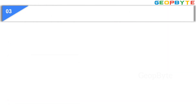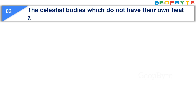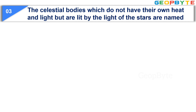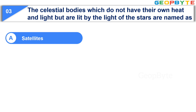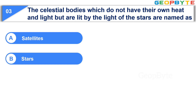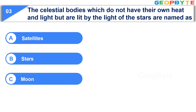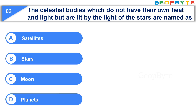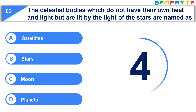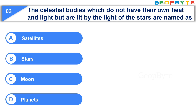Now let us see the third question: The celestial bodies which do not have their own heat and light but are lit by the light of the stars are named as — Option A: Satellites. Option B: Stars. Option C: Moon. Option D: Planets. Your time starts now. Your time is up and the correct answer is Option D: Planets.